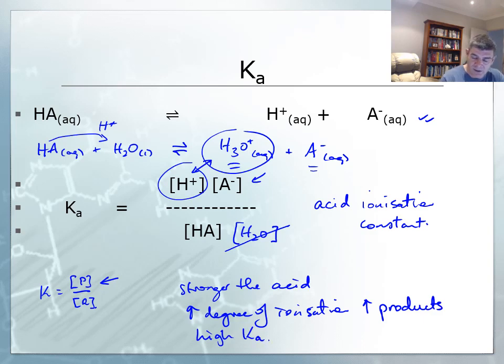So Ka is the equilibrium constant, and we use the subscript A to indicate acid. Ka is the acid ionization constant.